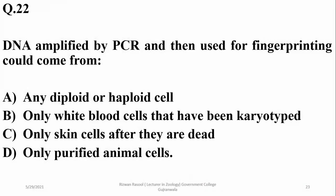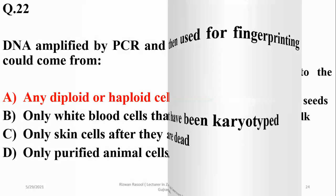DNA amplified by PCR and used for fingerprinting can come from any diploid or haploid cell, alpha.